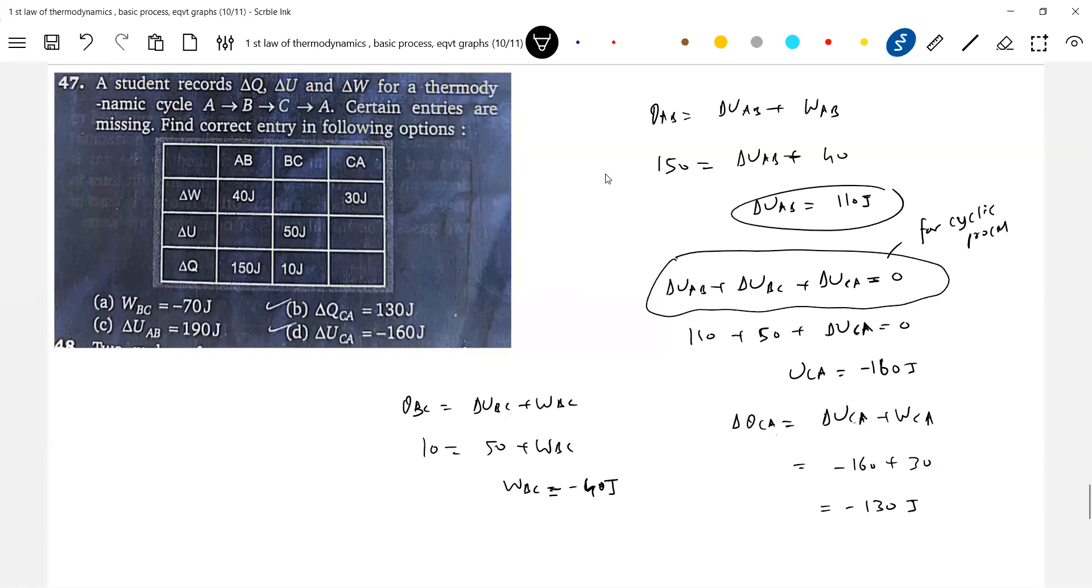In options, option B must be wrong. Q_CA minus 130. One thirty is given, yes sir. It should be like this: ΔU_CA minus 160, W_BC minus 40.